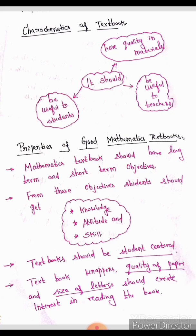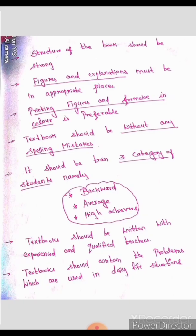This is the characteristics of a textbook. Now, the properties of a good mathematics textbook: a mathematics textbook should have long-term and short-term objectives. From the objectives, students should get knowledge, attitude, and skill. The textbook should be student-centered, with all activities available. The quality of paper and size of letters should create interest in reading the textbook.